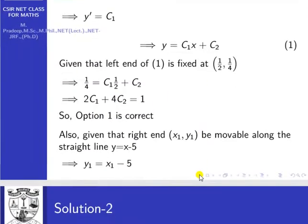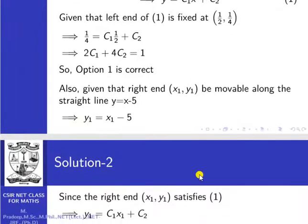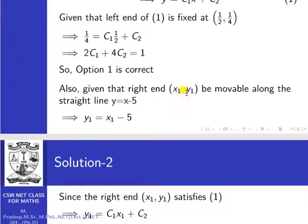For the right end: x1, y1 is movable along the straight line y equal to x minus 5. Since the point (x1, y1) moves along this line, it must satisfy the line. So y1 equal to x1 minus 5.